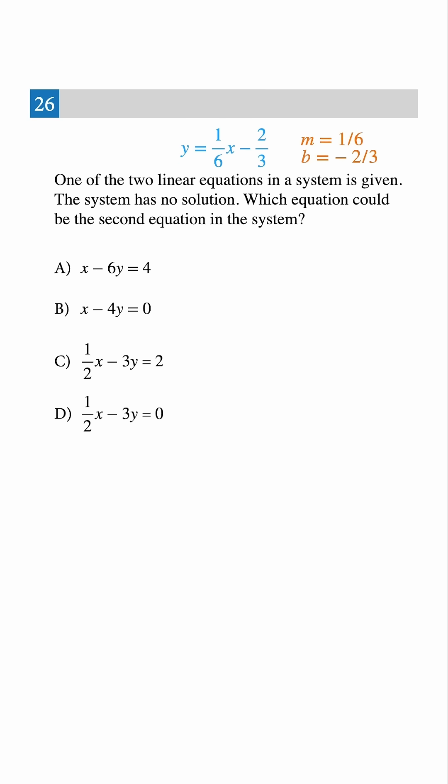Now, let's check the choices. Choice A, x minus 6y equals 4. Let's write it in slope-intercept form, and look, that's exactly the same as our given equation. Same slope, same intercept, which means infinite solutions. Not our answer.